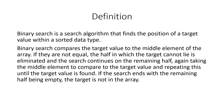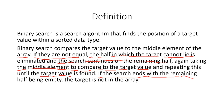Binary search takes the middle element of the array or any other linear data structure, but in most cases it's an array. If the middle value is not equal to the target value, then the half in which the target doesn't lie is eliminated and the search continues on the remaining half. On that half, we again take the middle element and compare it with the target value. We repeat until we find our target. If the search ends with the remaining half being empty, then the target is not in the array.